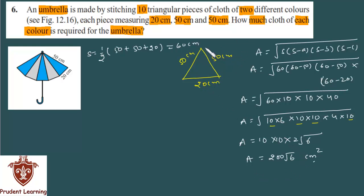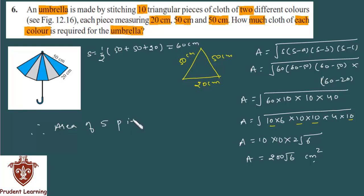This is the area of one triangular piece of cloth. The umbrella uses 10 triangular pieces in total, with two different colors. So each color uses 5 triangular pieces. Area of 5 pieces of each color equals 5 into area of one triangle, which is 200√6.